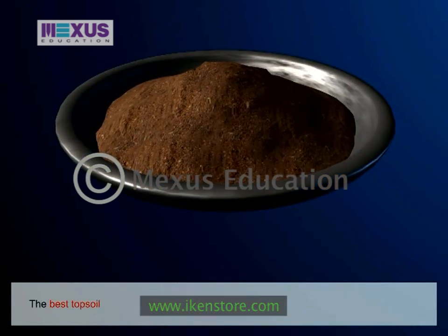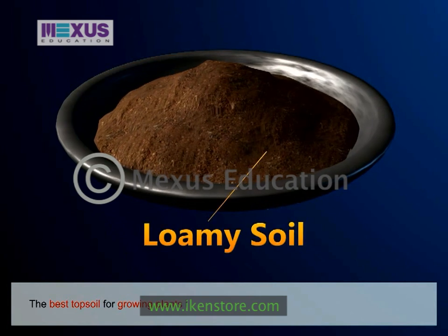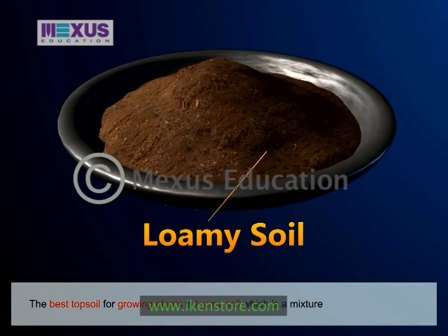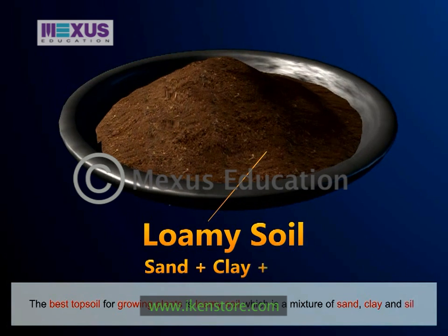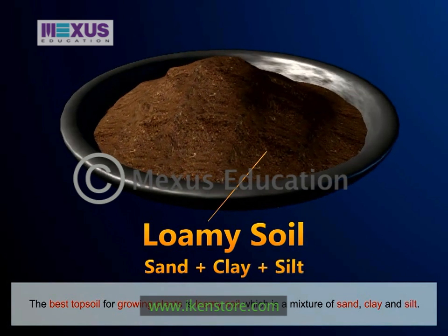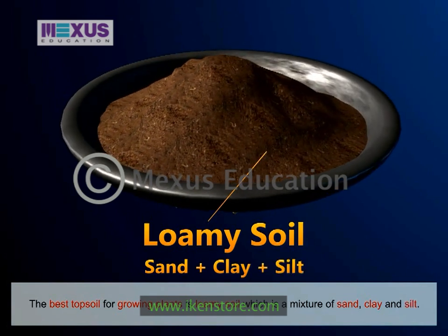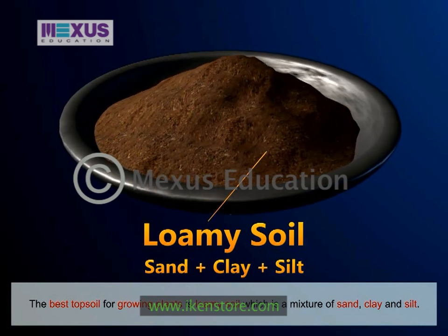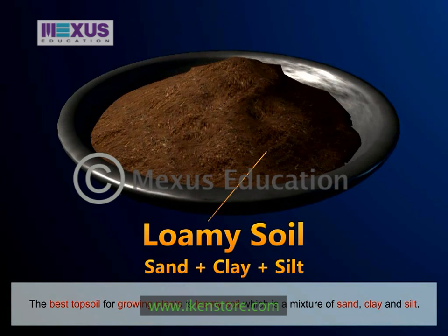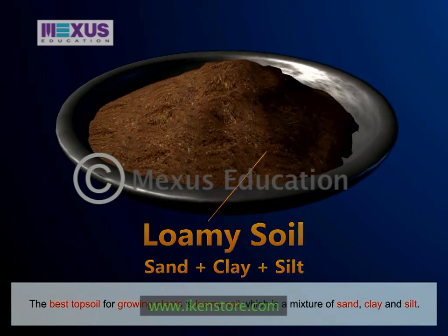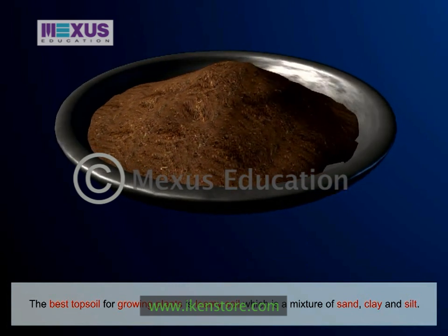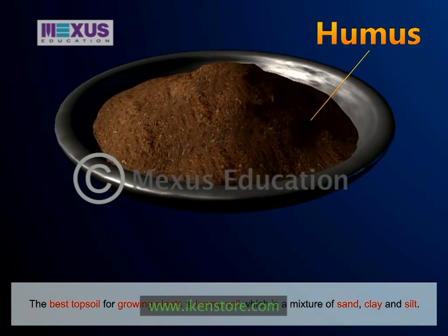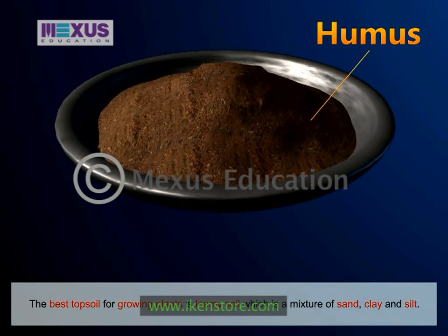The best topsoil for growing plants is loam. Loamy soil is a mixture of sand, clay and silt. Silt occurs as a deposit in river beds, and the size of silt particles is between those of sand and clay. The loamy soil also has humus in it and has the right water-holding capacity for the growth of plants.